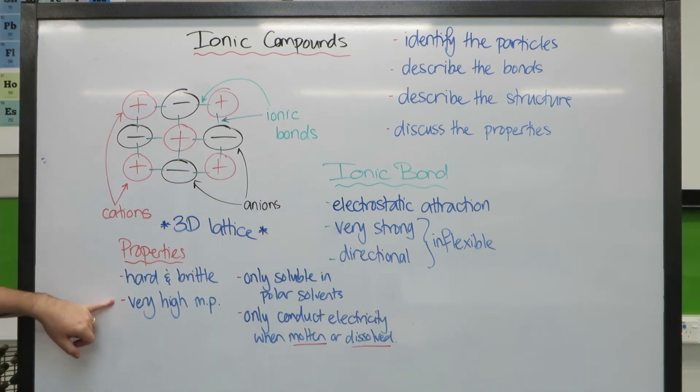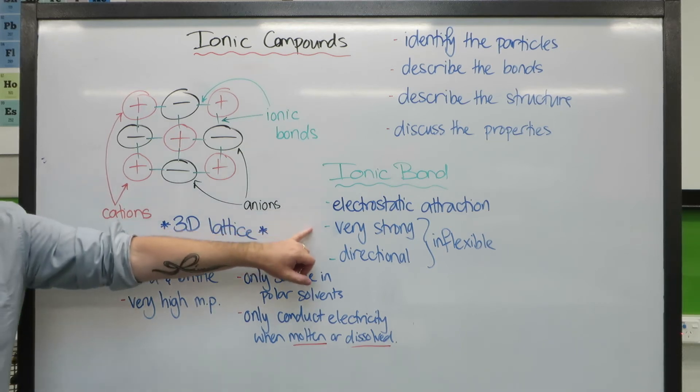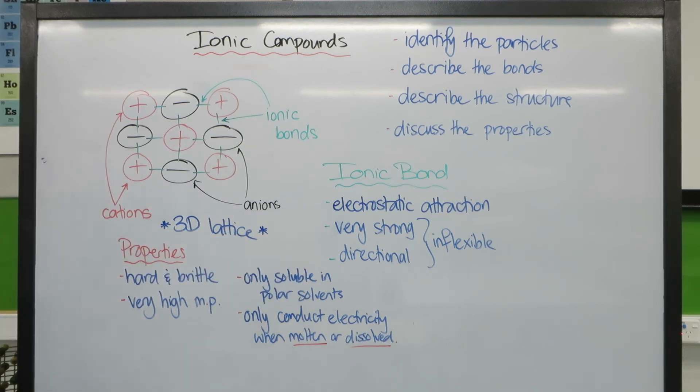The very high melting point is also to do with the strength and direction of the ionic bond. Just like it was very hard, it takes a lot of heat energy to break these ionic bonds sufficiently for each ion to move separately. And that's what melting is - it's when the ions move separately. They are able to move away from each other because of the amount of heat energy present.